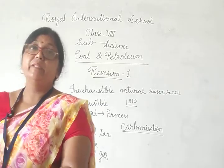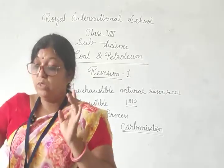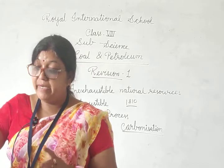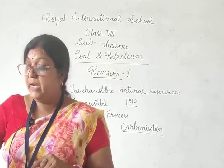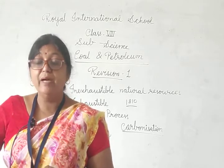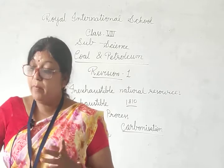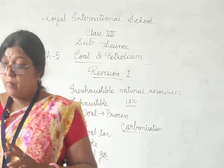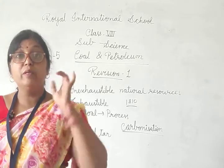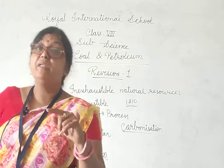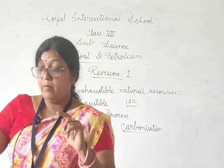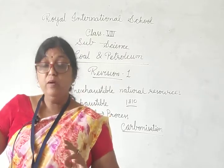Types of coal: Peat jo hoti hai wo sabse halki quality ki hoti hai, light brown hoti hai, kewal 50-60% carbon hoti hai. Lignite jo hoti hai, peat ke baad mein aata hai — iske andar 60% carbon hoti hai. Bituminous aata hai third stage mein — iske andar 70-80% carbon hoti hai. Last hai aapka anthracite — oldest variety of coal — sabse jyada lambe time tak raha — aapka anthracite, and it contains 90-95% of carbon.